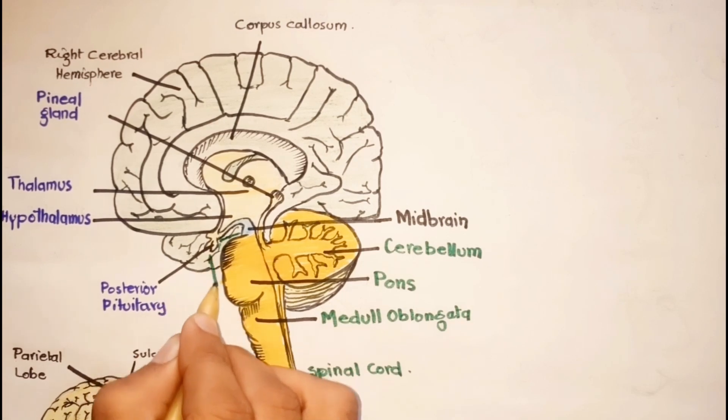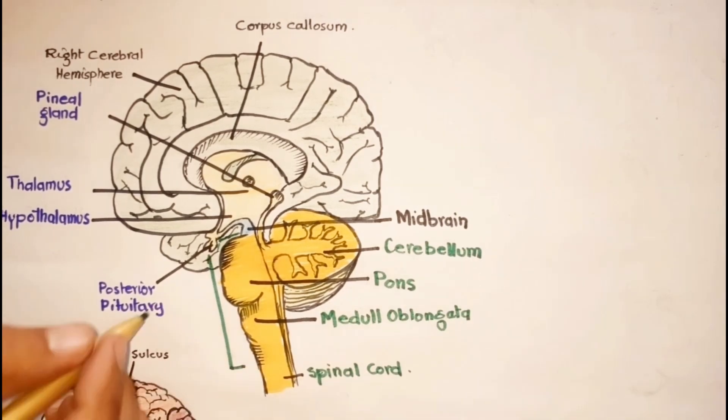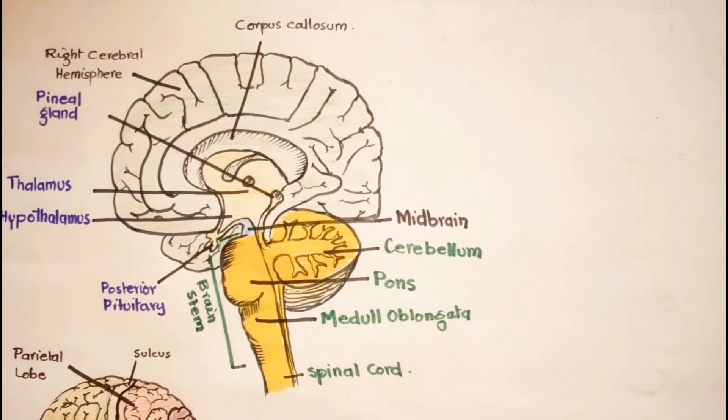Furthermore, the midbrain, pons, and medulla oblongata are together called the brain stem.